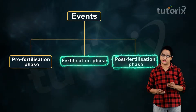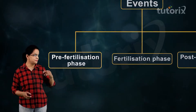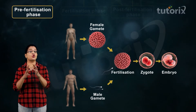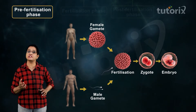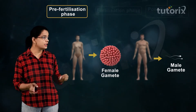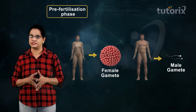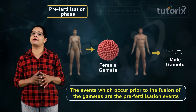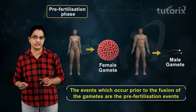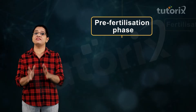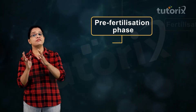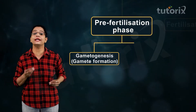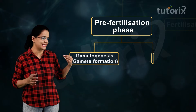The pre-fertilization events include those happenings or events which are prior to the fusion of the gametes. The two main events that occur in the pre-fertilization phase are gametogenesis, or gamete formation, and gamete transfer.